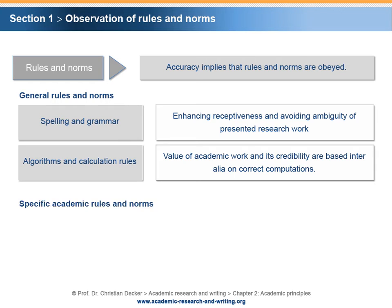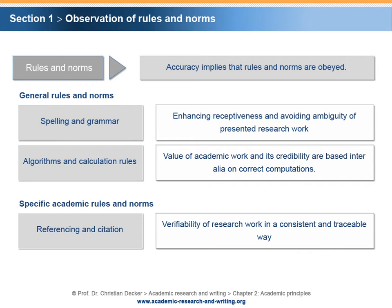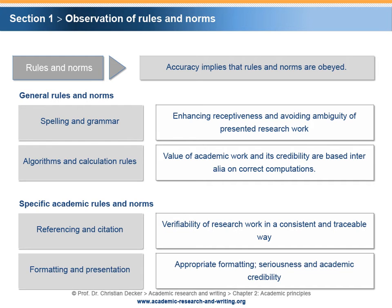Furthermore, there are specific academic rules and norms that exist predominantly in the academic world. Referencing and citation: verifiability of propositions and conclusions is of utmost importance in the world of sciences. Correct referencing and citation allow for verifiability of research work in a consistent and traceable way. Formatting and presentation: academic documents and presentations imply an appropriate formatting of the work to be prepared, submitted and presented. Although different forms of documenting and presenting might be adopted, a certain seriousness and academic credibility will be expected.